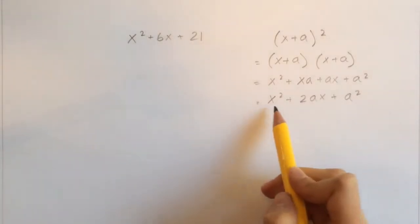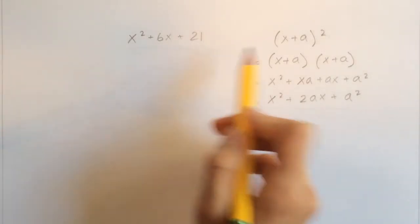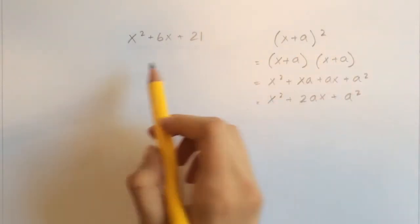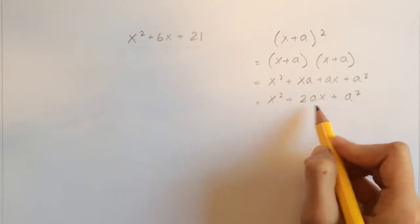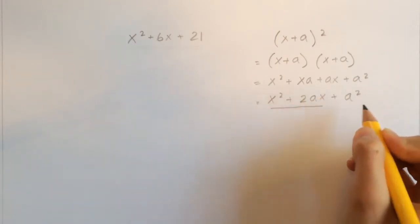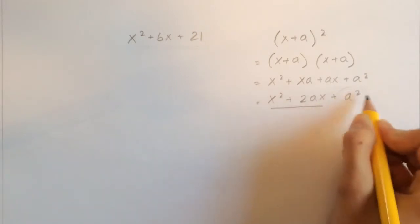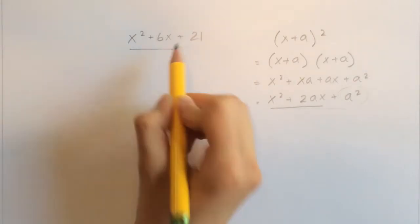Now we have two things that look alike a little bit. We are going to focus on the terms that have an x in them. So we're only going to be focusing on x² + 2ax right now. We're going to ignore this a². And same here, we're going to focus on x² + 6x.